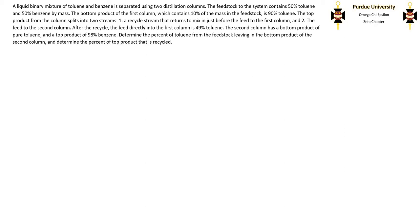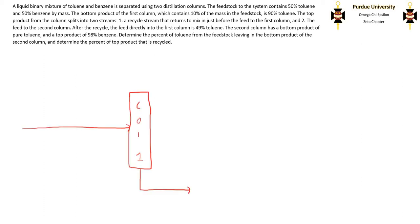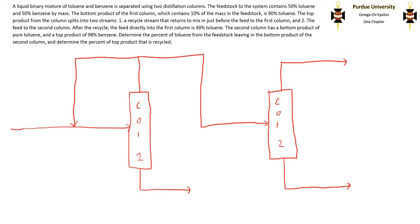With any problem like this, the first thing to do is to draw out a process flow diagram with all of the information given in the problem statement. It told us that the first column's top product splits into two streams: the feed to the second column and the recycle stream back to the feedstock.